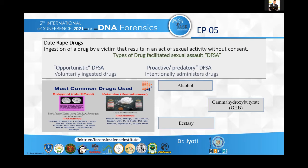In proactive or predatory DFSAs, a person intentionally gives the drug to a victim so that they can take advantage of that particular person. The most common drugs found in the literature include Rohypnol, which is the main name for flunitrazepam. They fall under the category of benzodiazepines and are sold on the street under names such as Roche, Rib, Rufi, and Rofi.